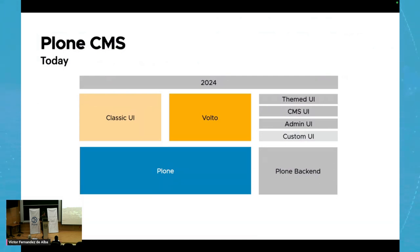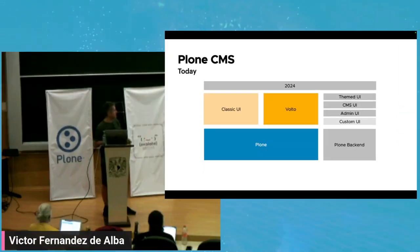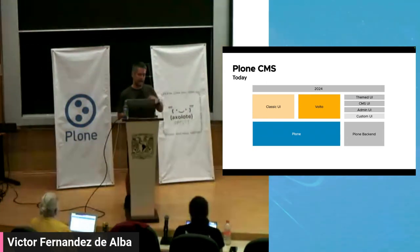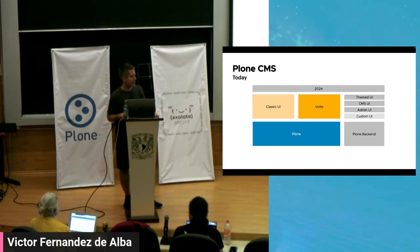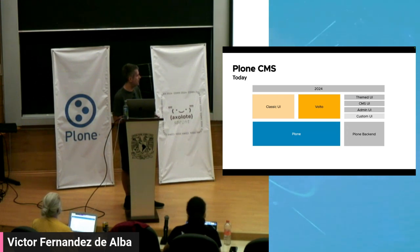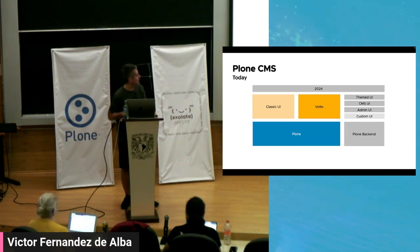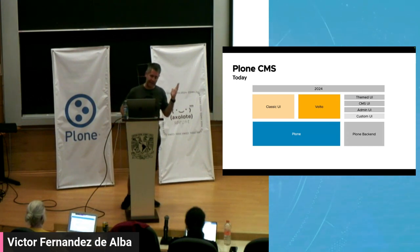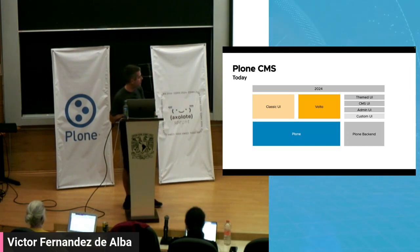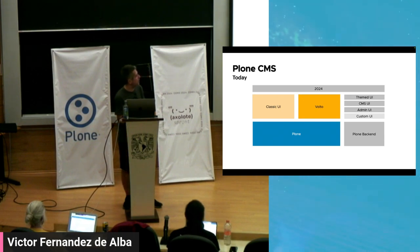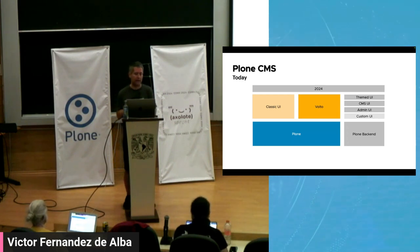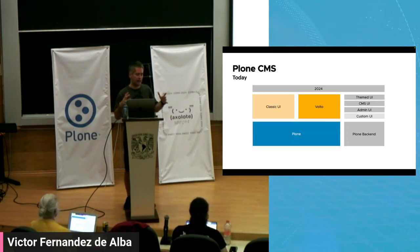Plum CMS today — this is the architecture that we use. We currently have two reference implementations. One is Classic UI, based on Python for both the backend and the UI. We have Volto, which is the reference implementation in React.js and is currently the default and recommended UI for Plum. We've been building projects with Classic and Volto — Classic for more than 20 years, Volto for 6-7 years — and both share the same monolithic approach.